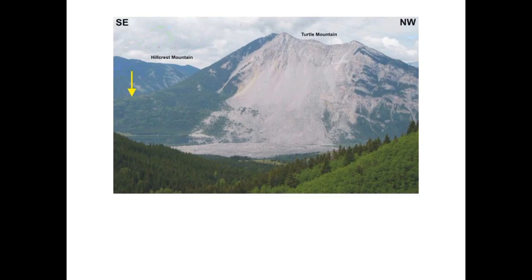Another Alberta example is the Frank Slide in the Crowsnest Pass in southern Alberta, going back to 1903. About half of Turtle Mountain slid down in the middle of the night. All the rubble at the bottom is bare rock all the way down the slope — a major disturbance with no soil whatsoever. A rock slide like this is another example of primary succession. Note that if there's a landslide where soil still remains, that would not be primary succession, but where bare rock is clearly present, it qualifies as primary succession.